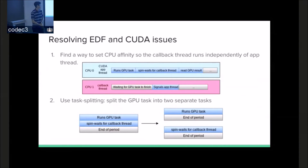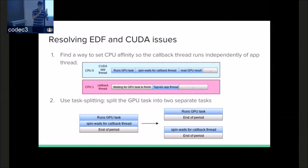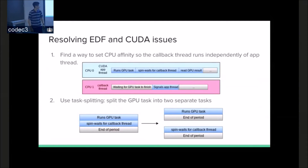The other solution is to use task splitting. Instead of saying I'm going to run, send off a task to the GPU, wait for a result back, process it, and call that a single period — we split it into two tasks. We fire off the operation, and then on the next period we read the input and handle any signals. So if I get a frame every one-thirtieth of a second, I cut the period in half to one-sixtieth of a second and have two distinct phases.